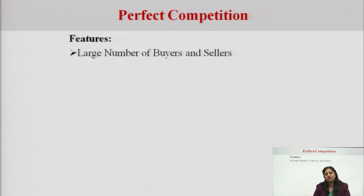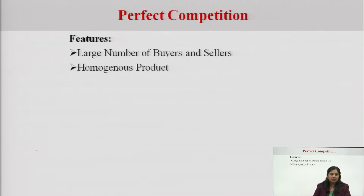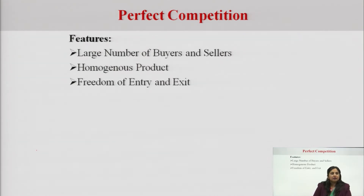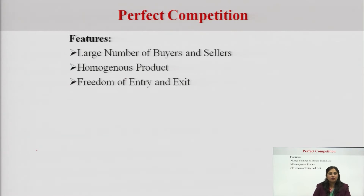The features: as we said, there are large numbers of buyers and sellers. The product is homogeneous, meaning it is not differentiated. All the products of all the sellers are perfect substitutes of each other. This means that the cross elasticity of demand of the product of one seller with respect to another seller would be close to one, because they are perfect substitutes of each other.